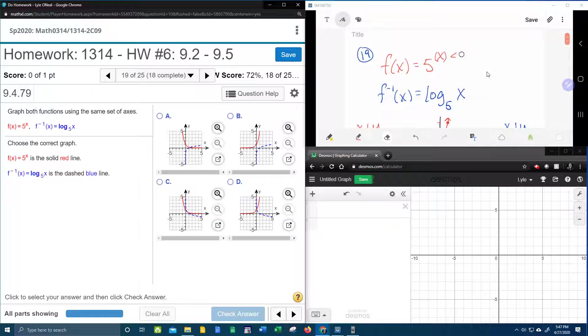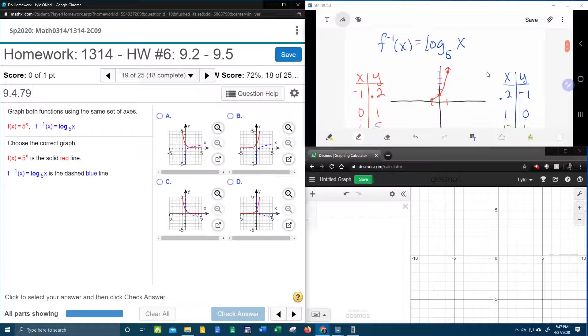I said that the constant that's added or subtracted to the exponential is where the asymptote is. So out here there is no constant. So we could say plus 0, there's no constant. And so what that means, it means that the x axis is going to be an asymptote. And so our graph is going to approach the x axis but never touch.